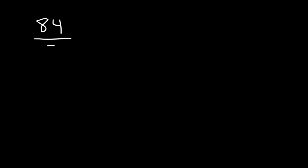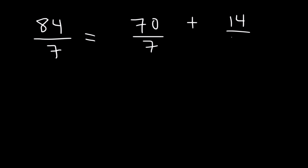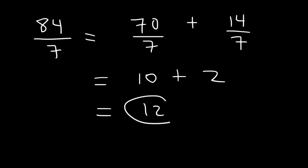Let's try another example: 84 divided by 7. Break 84 into 70 and 14, since both are divisible by 7. 70 divided by 7 is 10. 14 divided by 7 is 2. 10 plus 2 is 12. So 84 divided by 7 is 12.